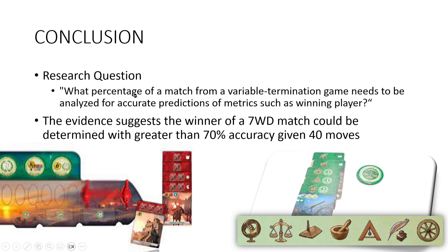In conclusion, what percentage of a match from a variable termination game needs to be analyzed for accurate predictions of metrics such as a winning player? The evidence suggests that the winner of a 7 Wonders Duel match could be determined with greater than 70% accuracy given 40% of moves, just like an expert could at the game. Thank you so much for your time and have a great rest of your day.